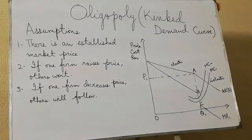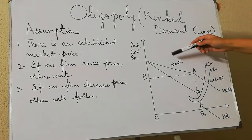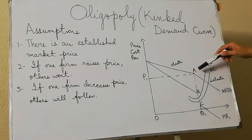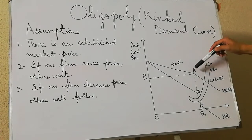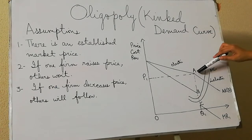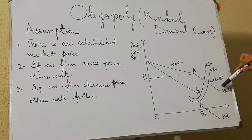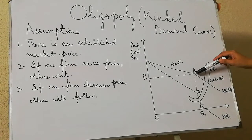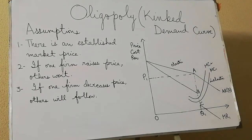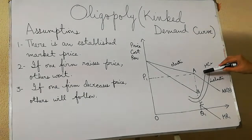Now let's talk about this demand curve. We can see two different types of demand curves. Before the kink, the demand curve is elastic, and after the kink it is inelastic. The logic behind the elastic portion is that if any firm raises its price above P1, the rest of the firms are not going to follow, which means that firm is going to see a large decrease in their demand.